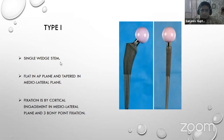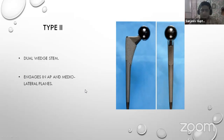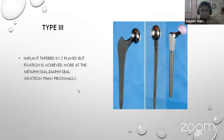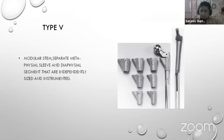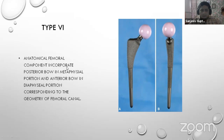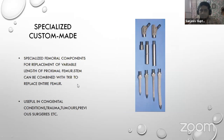There are six types of cementless femoral stems. Type 1: single wedge stems, flat in the AP plane, tapered in the medial-lateral plane, with three-point bony fixation. Type 2: dual wedge stems engaging both AP and medial-lateral planes. Type 3: splined stems tapered in two planes with fixation at the metaphyseal-diaphyseal junction. Type 4: extensively coated implants with fixation along the entire stem length. Type 5: modular stems with separate metaphyseal sleeves and diaphyseal segments independently sized. Type 6: anatomical femoral components incorporating posterior bow in the metaphyseal and anterior bow in the diaphyseal portion.